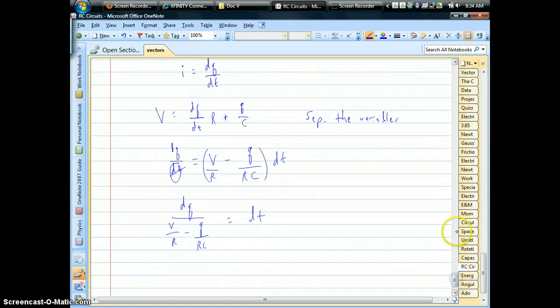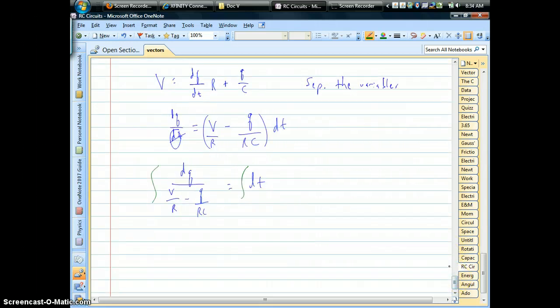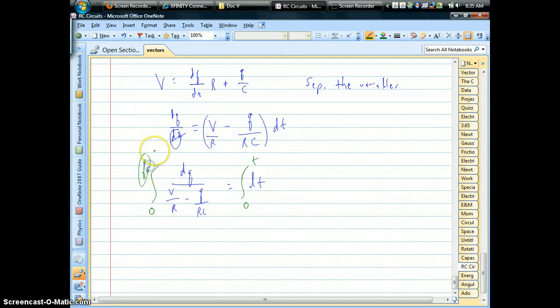In this form, we can go ahead and integrate. This is the only step of calculus that we'll have to do. We also need limits on our integrals. The time side is the easier one. When you close the switch, that starts the clock, time equals zero, and we're just going to let it run for however long. Corresponding over here, for charge, the capacitor starts off uncharged, so the charge starts at zero and goes to some final charge after that time period has run off.